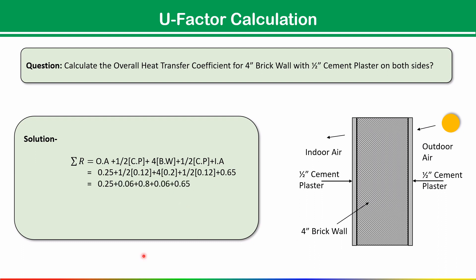Putting all the values together, the total summation of R comes out to 1.82. Since U equals 1 divided by summation of R, we get a U-value of 0.54 BTU per hour per square foot per degree Fahrenheit. That is how we calculate the U-value. I hope all of you enjoyed the session — see you in the next one.